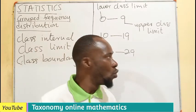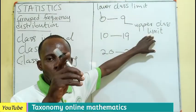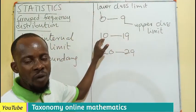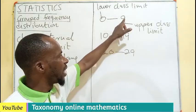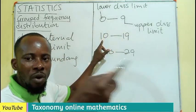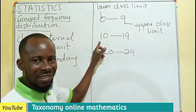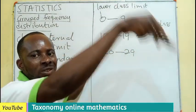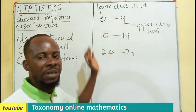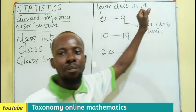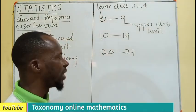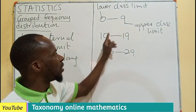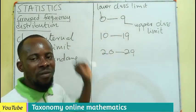In a grouped frequency distribution, the class boundary is usually the halfway point between the upper class limit of one class and the lower class limit of the next one. Halfway meaning: add the upper class limit of one class and the lower class limit of the next, then divide by two to get the class boundary.